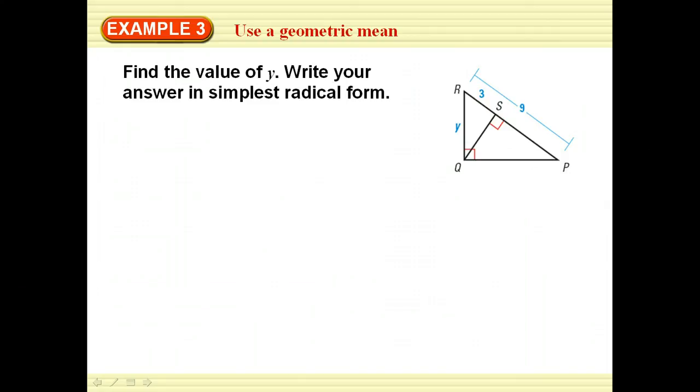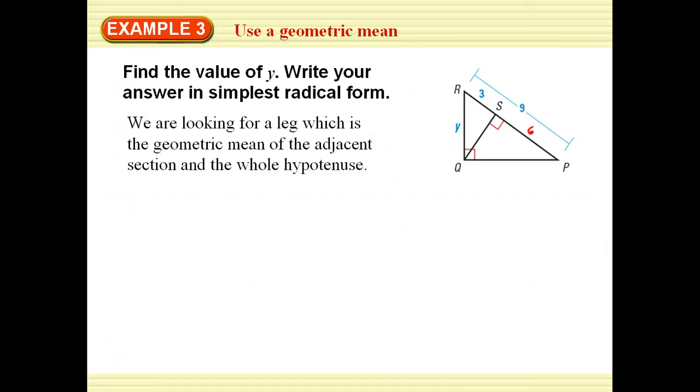Here I see that I'm looking for RQ, which is Y. I know this segment is 3, the whole thing is 9, which would make this part 6. So if I'm looking for Y, it's the geometric mean of the adjacent section 3 and the whole hypotenuse, which is in this case 9. So my Y comes out to be approximately 5.2. The section next to it and the whole thing.